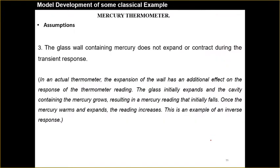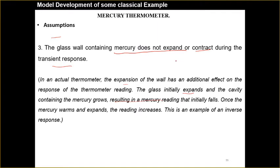The third assumption is that the glass wall containing mercury does not expand or contract during the transient response. In actual thermometers it does happen — the expansion of the wall has an additional effect on the thermometer reading. When the glass expands, the cavity containing mercury grows, resulting in a drop in mercury reading first; then once the mercury warms and expands, the reading increases. This is an example of inverse response.